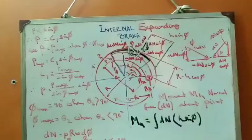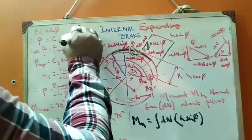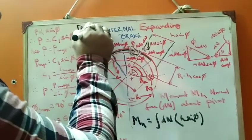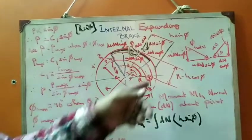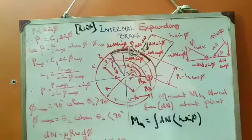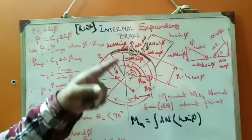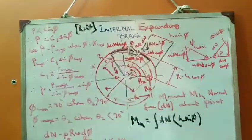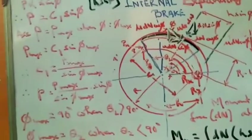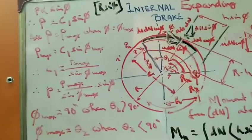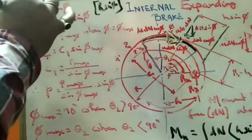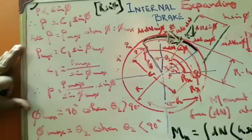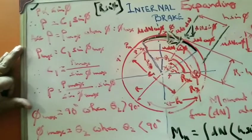As discussed in the previous part, P is proportional to r*sin(phi), where r is the radius of the drum. From the assumption that P is proportional to the vertical distance r*sin(phi), we can write P is proportional to sin(phi), and introducing a constant C1, we write P equals C1 times sin(phi).